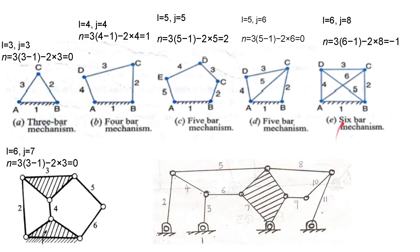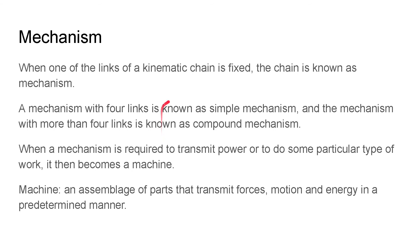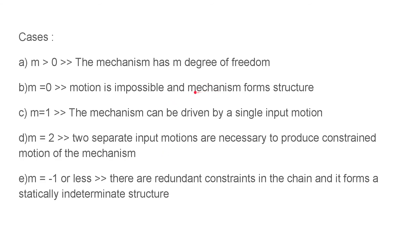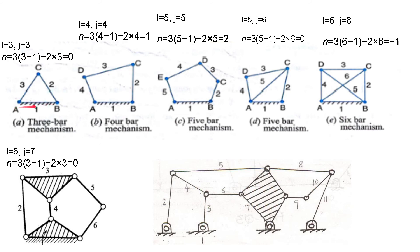Let's see some examples. For a three-bar mechanism: l = 3, joints = 3. To be a mechanism, one link must be fixed — fixing the link between joint a and joint b — gives degrees of freedom equal to zero, so this is not useful. For a four-bar mechanism there are four links, four joints, and one degree of freedom, so we can move one link (link 2 rotates about b) and link 4 will have a definite required motion.